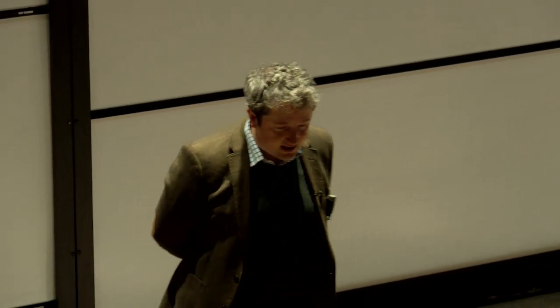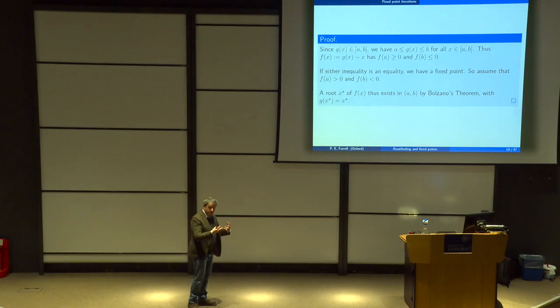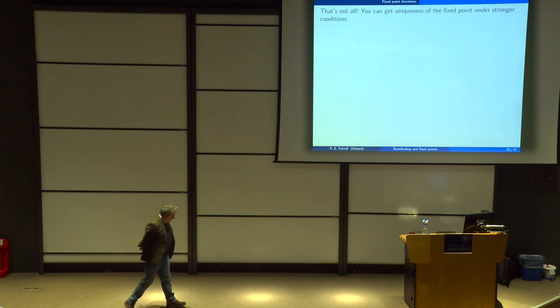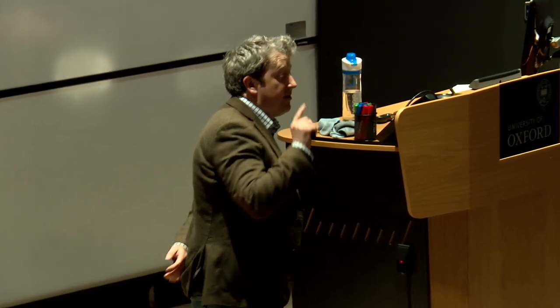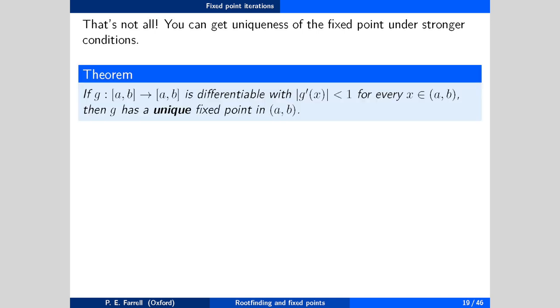This proof relied heavily on Bolzano's theorem, which is a very one-dimensional thing — and actually Brouwer's fixed point theorem is much, much more general. If you study algebraic topology, you will see a more general proof. We have existence of a fixed point, but that's not all. If you give me very slightly stronger conditions, then we can also prove uniqueness of the fixed point.